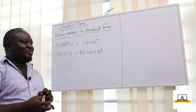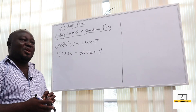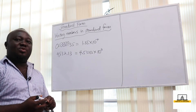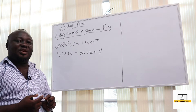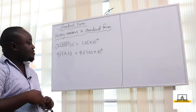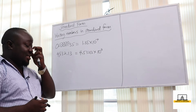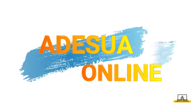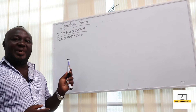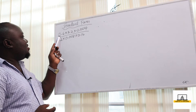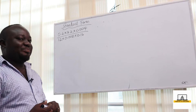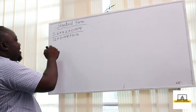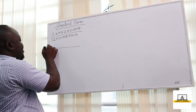In an exam, if you are asked to solve a question in standard form and leave your answer in standard form, the main idea is to convert those numbers into whole numbers. After simplifying, you then convert it back to standard form. So let's pick a question of that nature and start by converting all of them to whole numbers.